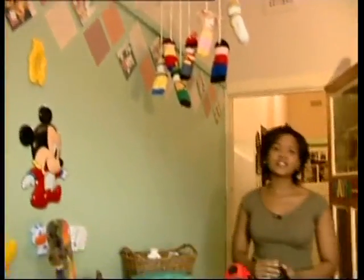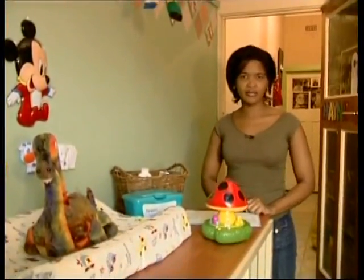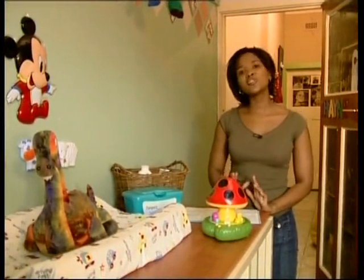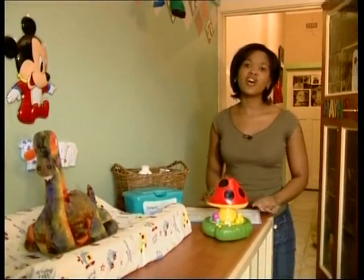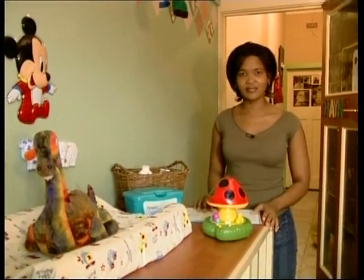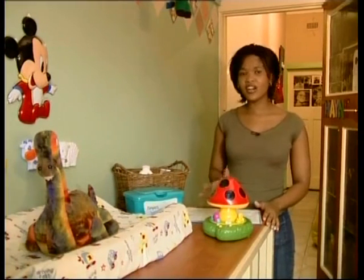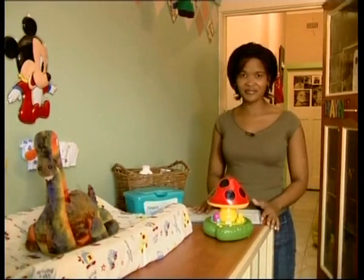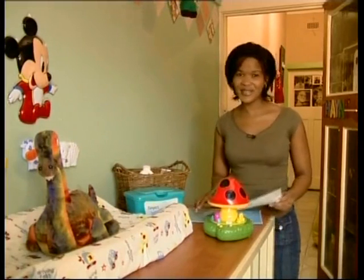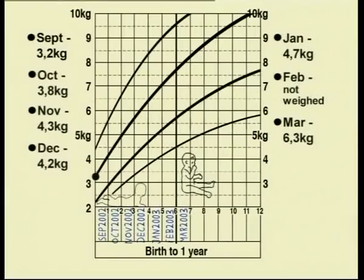Now let's look at an example of a broken line graph. Every baby that goes to a clinic has its growth plotted onto a graph on its clinic card. This gives the clinic a good idea of whether the baby is getting enough food. Let's see how this baby is doing. Here's the list of measurements made by the clinic health worker. We can plot them onto the graph provided by the clinic. This baby weighed 3.2 kilograms at birth — we can plot that here.